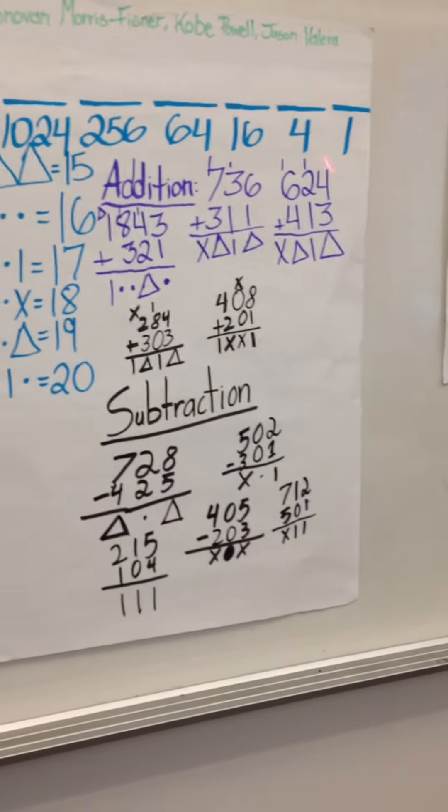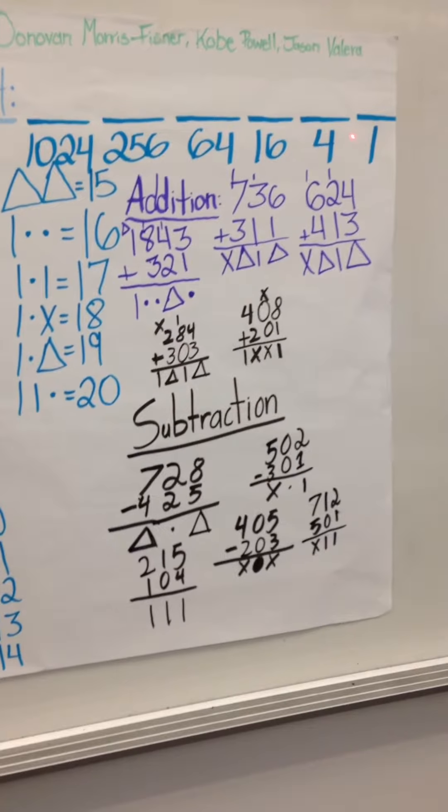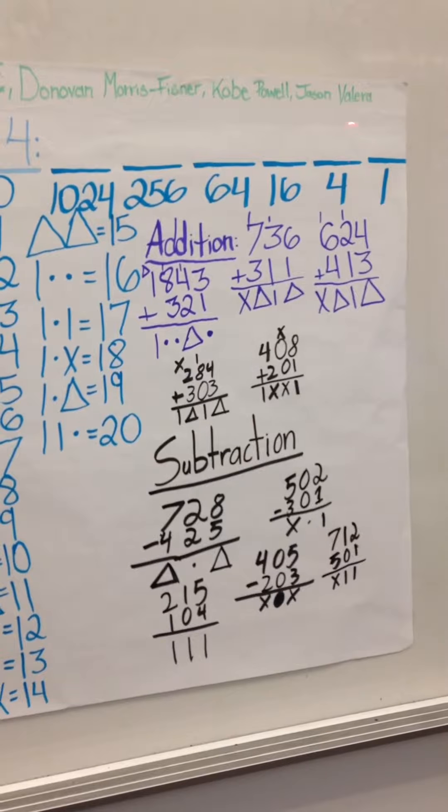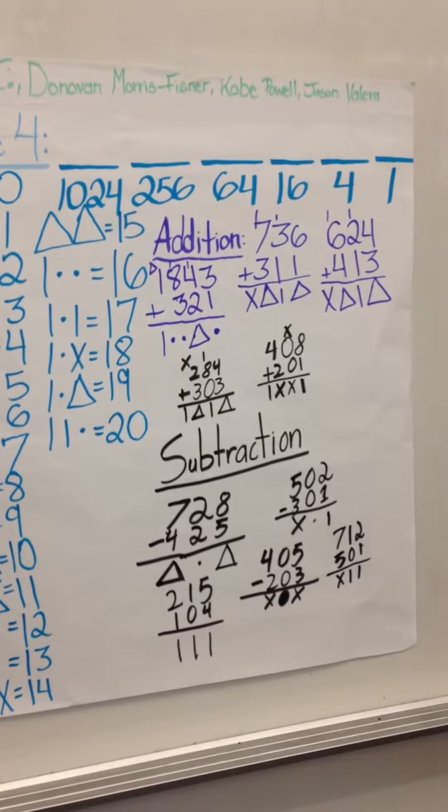Addition goes first. Right here we got the place values, you know how you do those, but one is always one.